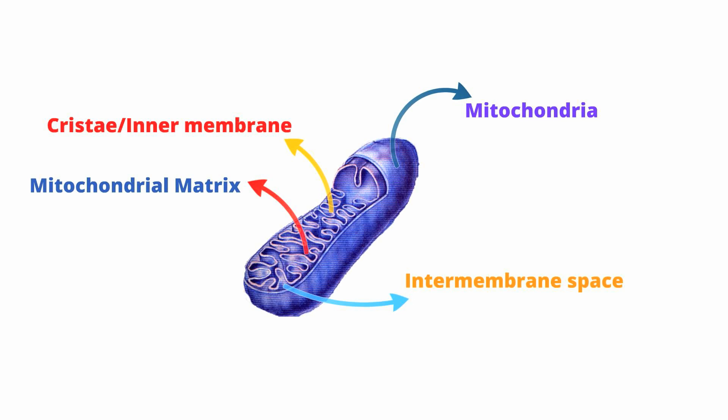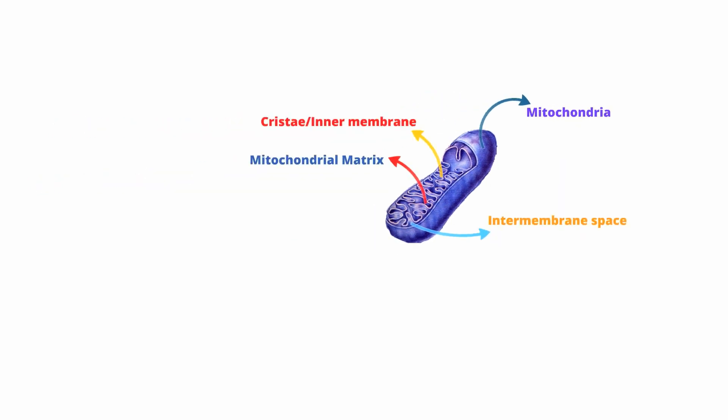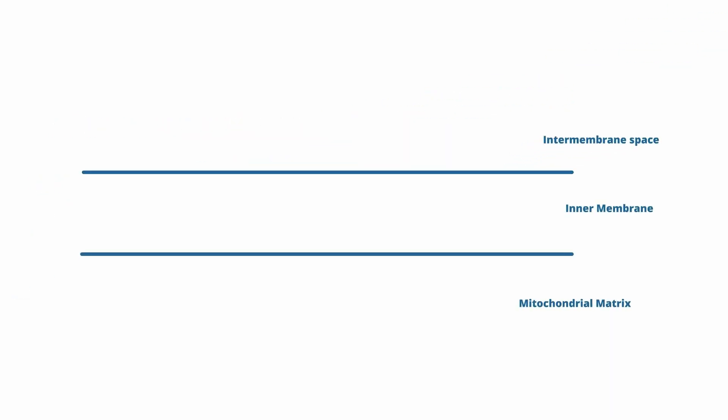There are four complexes involved in the ETC, with complex 5 being involved in oxidative phosphorylation. They are conveniently named complex 1, 2, 3, and 4. Unfortunately, a few of these complexes have alternate names, which I'll highlight as we go through the ETC.